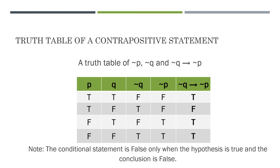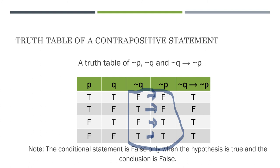Looking at your contrapositive truth table, I will need the negation of Q and then negation of P. The last column would be if negation of Q then negation of P. I have written the column for negation of Q first before negation of P so I can just focus on these values. If both statements are false, then I have true. If the hypothesis is true and the conclusion is false, then I have false. If the hypothesis is false and the conclusion is true, then it's true. And if both statements are true, I have true as well. This is the only time that my false statement occurs.